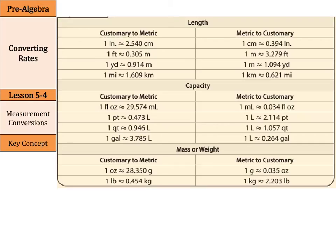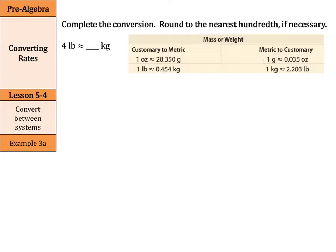Now, here's a table of all of our measurement conversions that we could use. We have length, capacity, and mass or weight. We have customary to metric and metric to customary. So if we want to complete the following conversion, rounded to the nearest hundredth if necessary, we can actually solve this in two different ways.